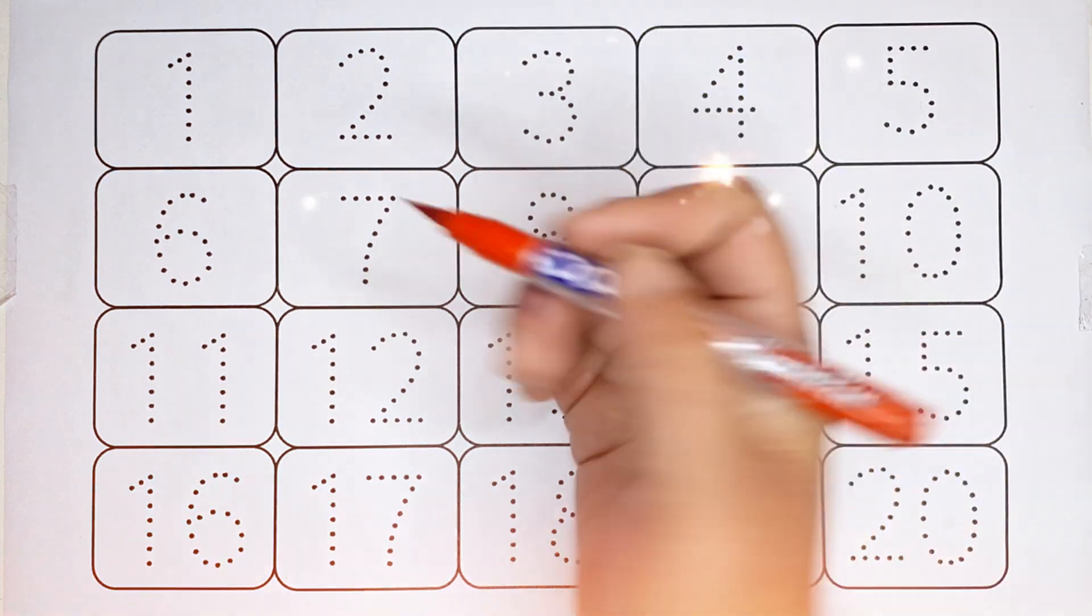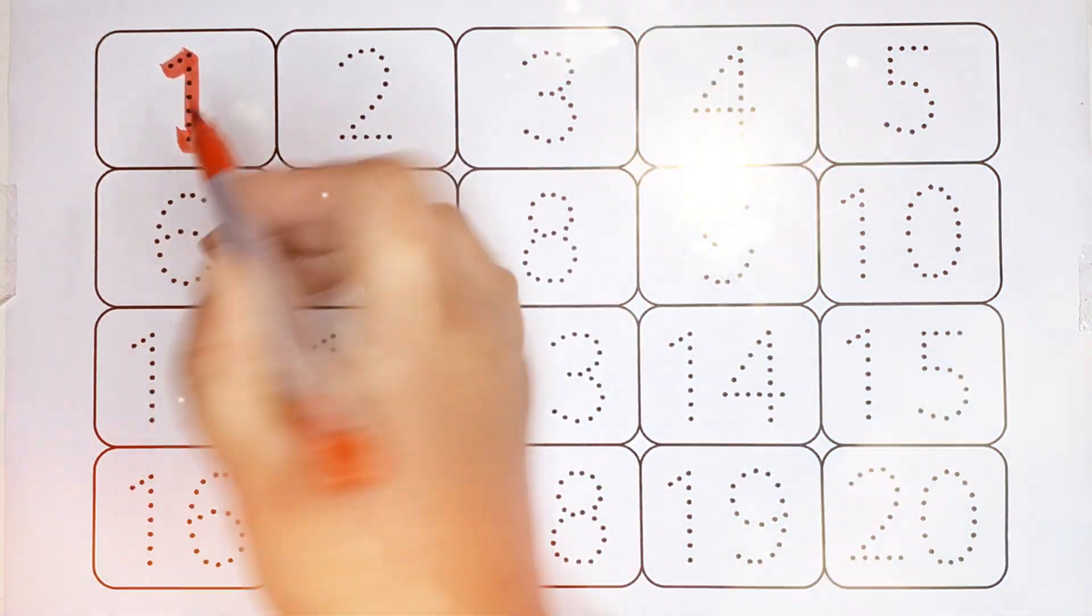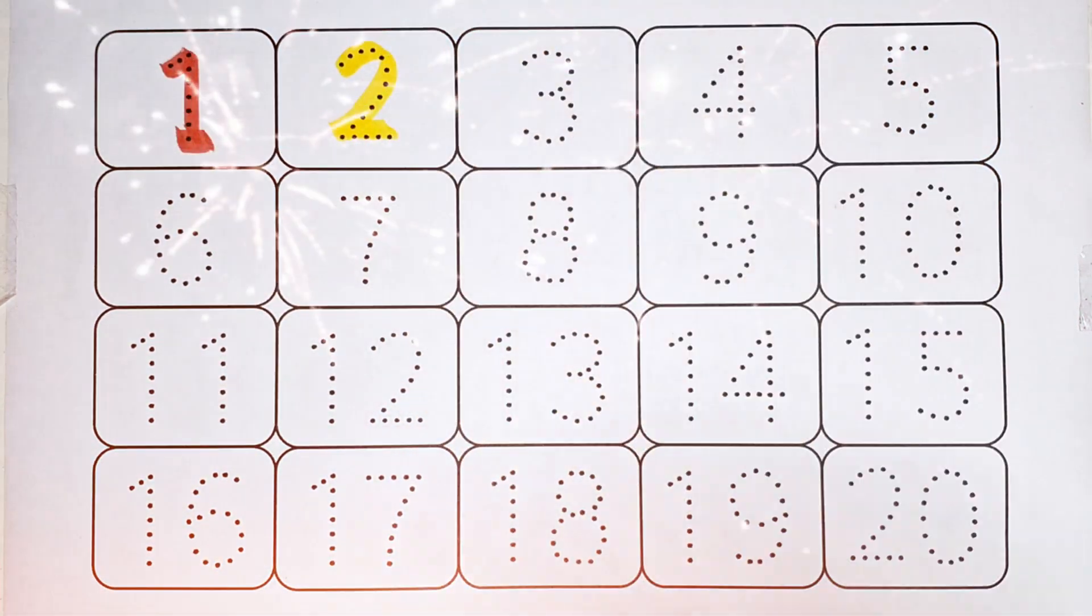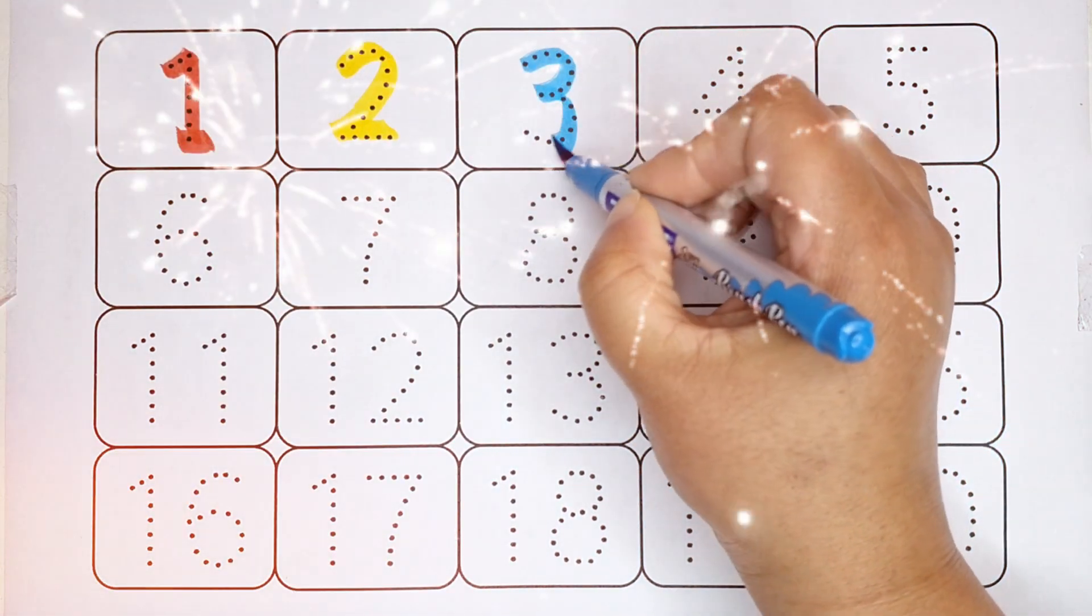Red color, 1, this is number 1. Yellow color, 2, number 2. Sky blue color, 3, number 3.